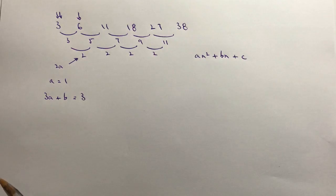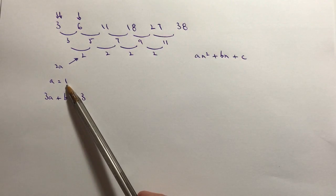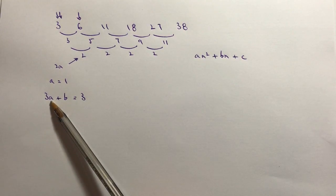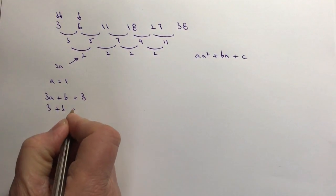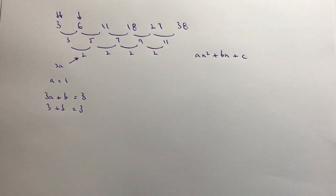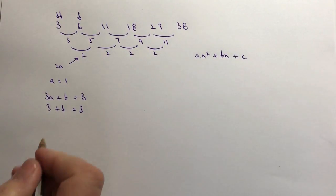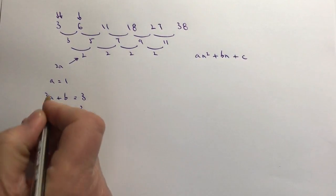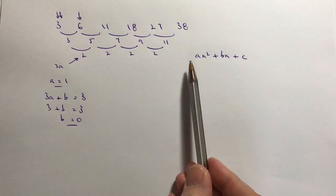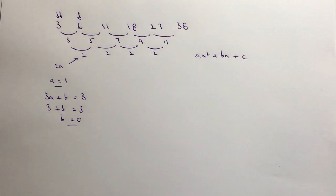So what I'm going to do is I'm going to take that value of a which is 1 and I'm going to plug it into this formula. So what I get is 3 plus b equals 3, so in this particular sequence if I take 3 from both sides it means that b equals 0. So those are my first two numbers that I'm going to put into this general formula.